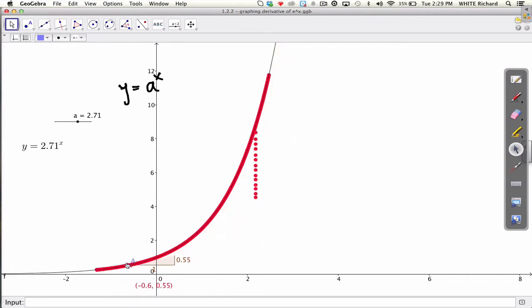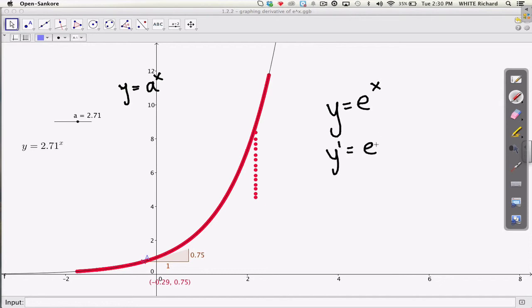Well, you should be very familiar with 2.71. That is e to the x. So if y is equal to e to the x, then the derivative, y prime, is also equal to e to the x.